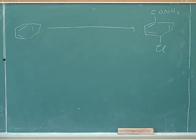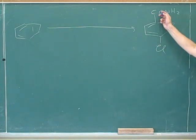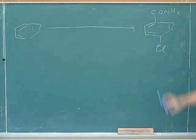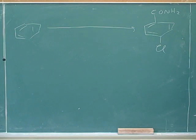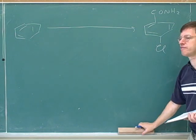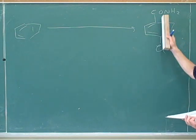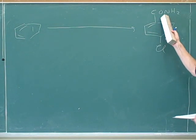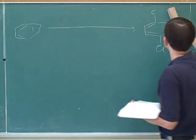Here's another synthesis. The first thing we have to do is decide what type of functional group this is. It's an amide. We just need to recognize that this is a condensed notation for an amide.